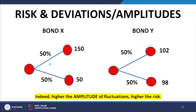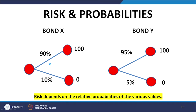Then we discussed the relationship between risk and deviations and agreed that greater is the amplitude of fluctuations — greater is the deviation of the future value of the asset from the mean value — greater is the risk embedded in the particular investment. Similarly, probabilities have a massive say in the riskiness of assets. For example, we discussed two bonds X and Y: bond X had a 90% probability of success and a 10% default probability; bond Y had a 5% default probability, so bond X is clearly more risky.